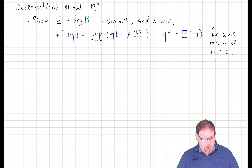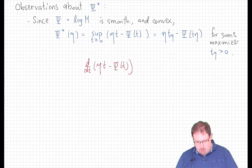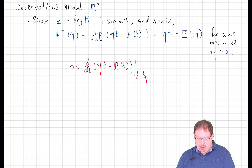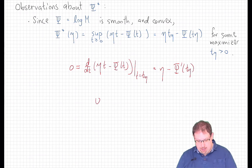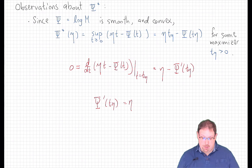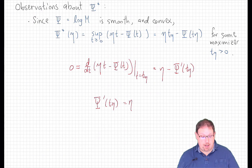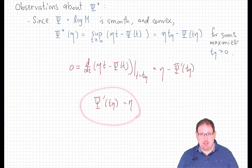From calculus, the maximizer will occur at a critical point. Writing down the critical equation, we need this derivative to be 0 at the maximizer, giving us eta minus psi prime at that maximizer equals 0. In other words, the maximizer satisfies that the derivative of psi at that maximizer is equal to the parameter eta, which will be epsilon for us. In a moment, we're going to give a probabilistic interpretation to this statement.